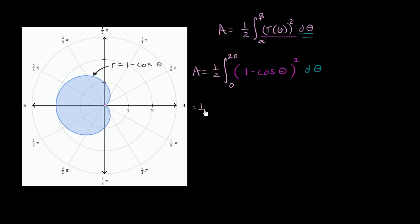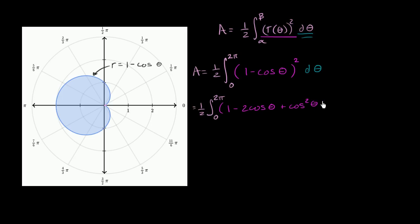This is going to be equal to one half times the definite integral from 0 to 2π. Let me expand this out. This is going to be 1 − 2cos(θ) + cos²(θ), dθ.